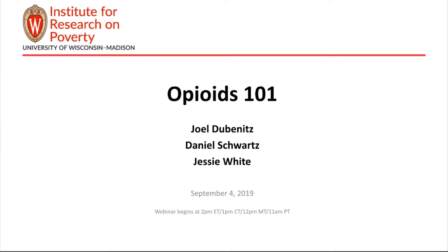Our presenters are Joel Dubinitz, Daniel Schwartz, and Jessie White. They're all federal staff at the Office of the Assistant Secretary for Planning and Evaluation, or ASPE, at the Department of Health and Human Services, who work on issues related to substance abuse and have been involved in federal efforts related to the opioid epidemic. Thanks to the three of you for being here today.